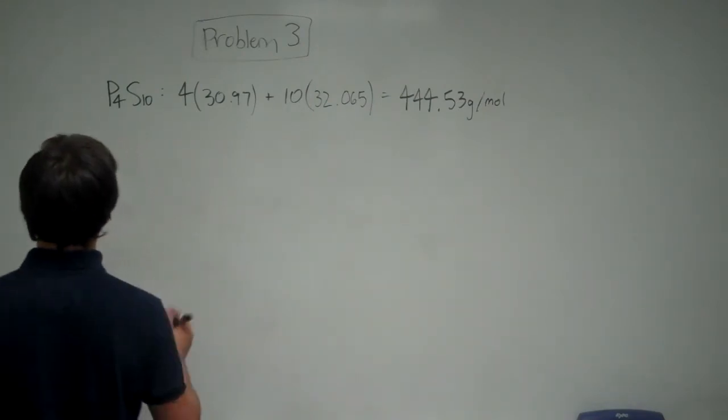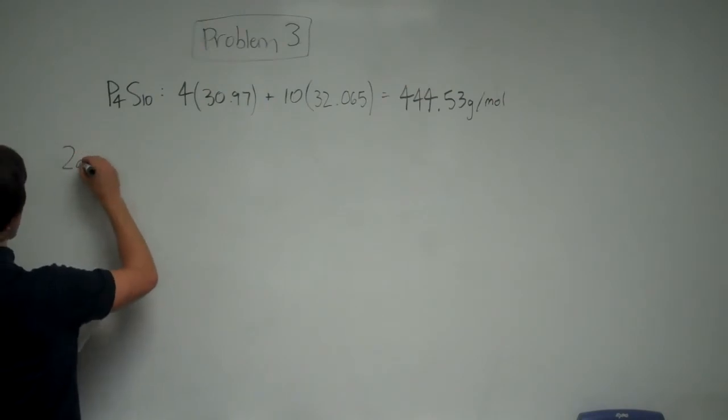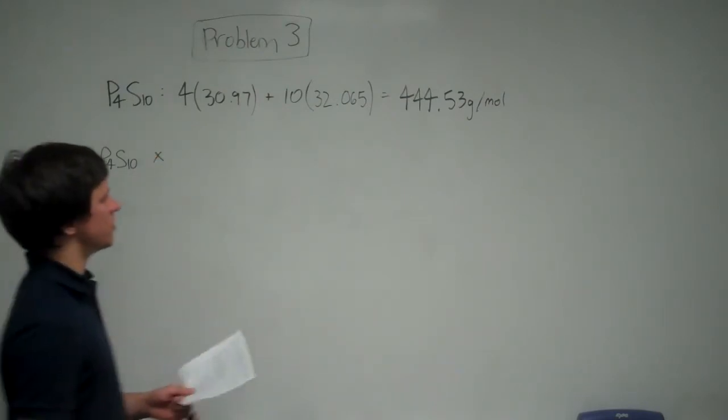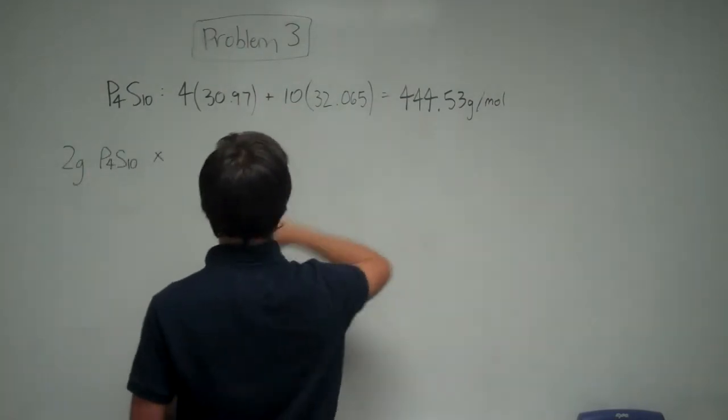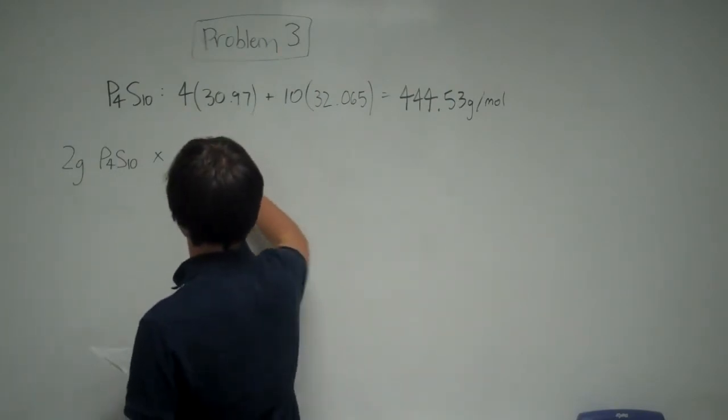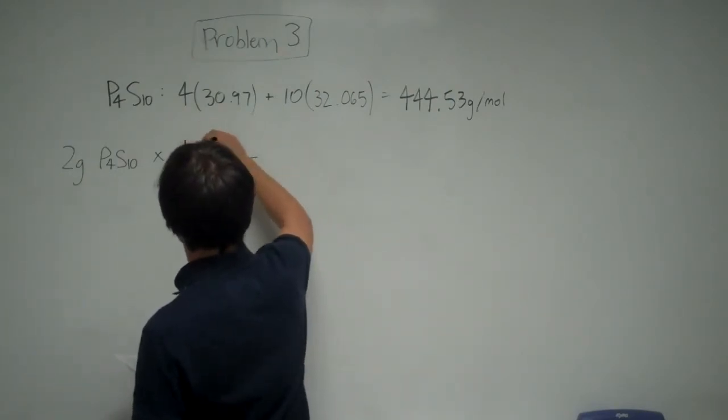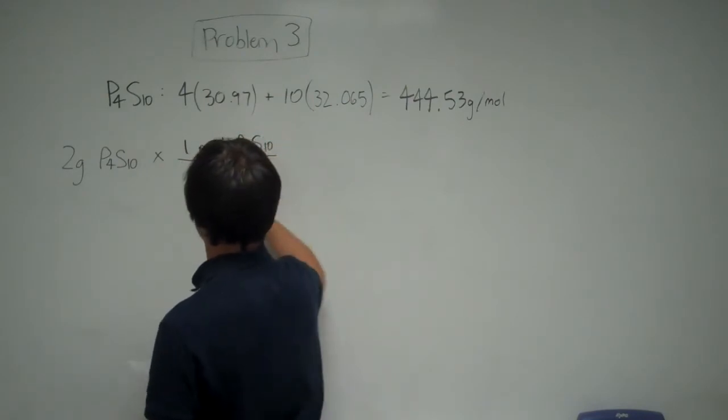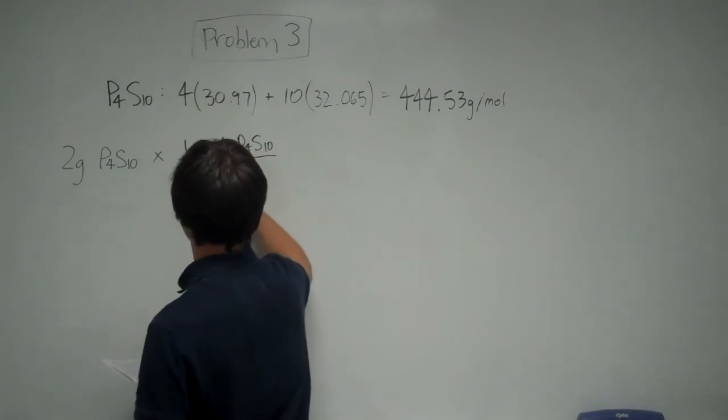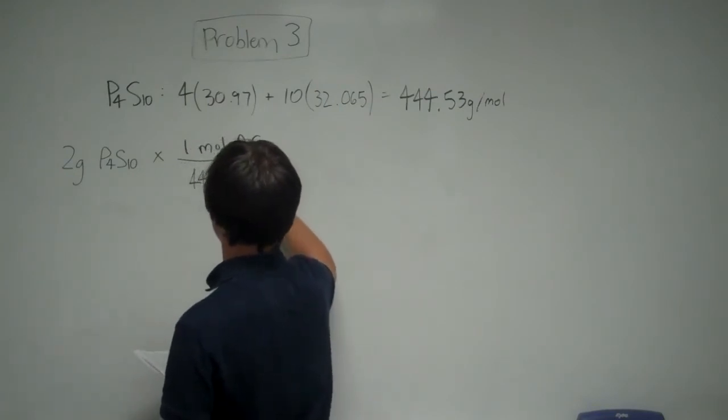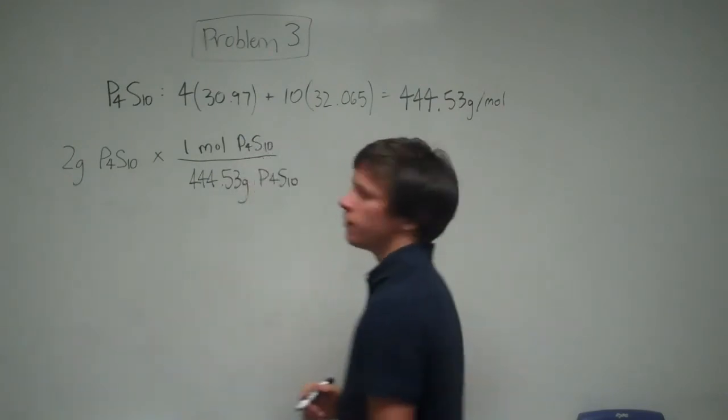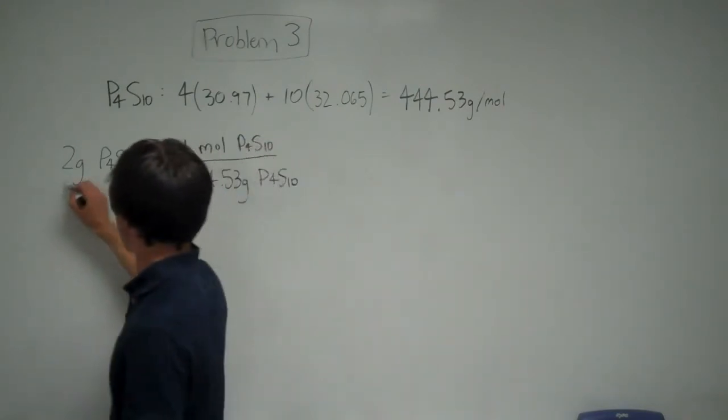So we're starting with 2 grams of P4S10. Now we can put this into moles using the molecular weight that we just derived. So for every one mole of P4S10, we have 444.53 grams of it. So the grams are going to cancel out.